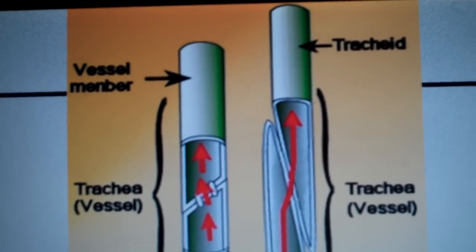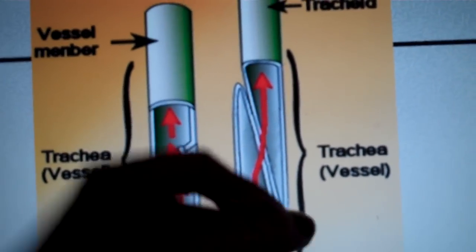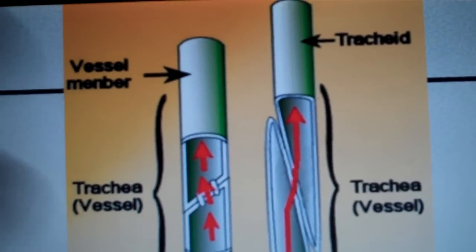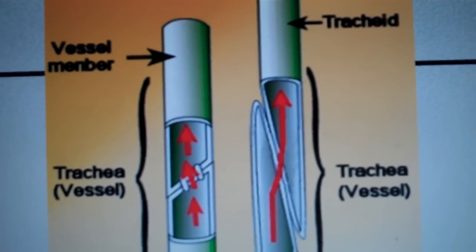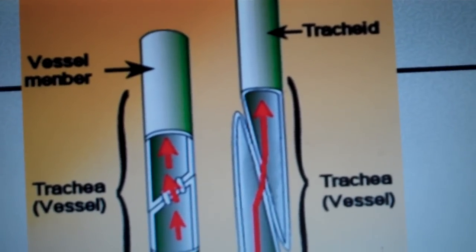Tracheids are long and thin and tapered, so tapered means they come to a point or they narrow, kind of like skinny jeans. The secondary walls, as I mentioned, are hardened with lignin, and this prevents collapse under tensions of water transport.